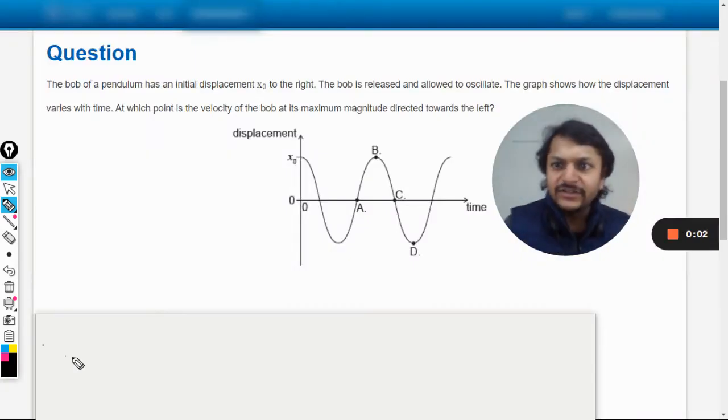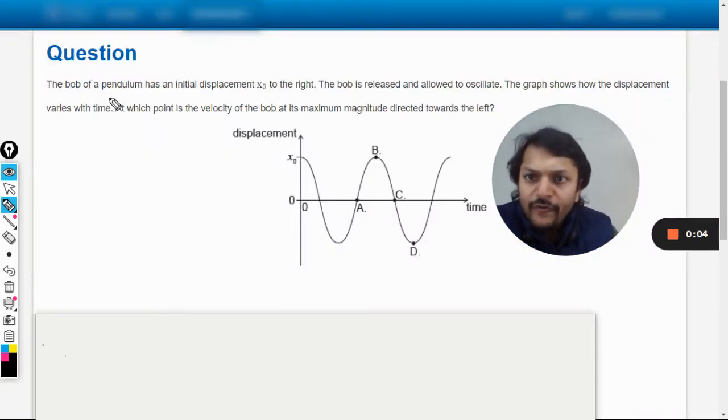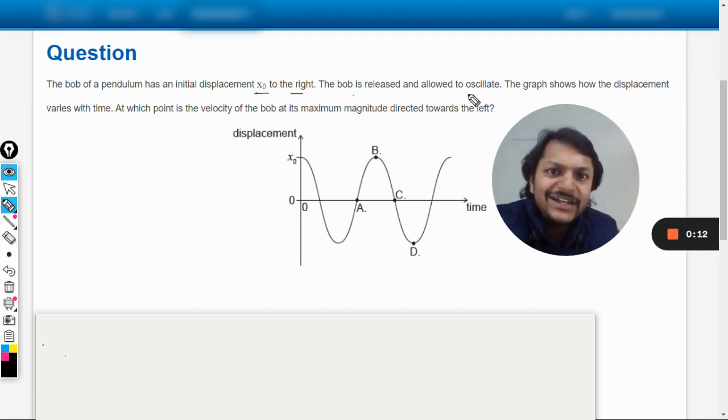Okay dear students, let us see what is there in this question. The bob of a pendulum has an initial displacement x naught to the right. The bob is released and allowed to oscillate. The graph shows how the displacement varies with time at which point is the velocity of the bob at its maximum magnitude directed towards left.